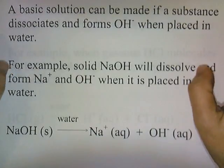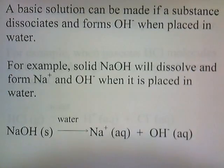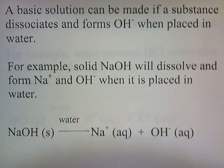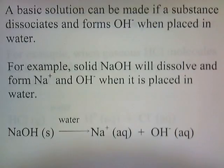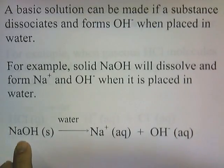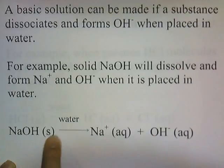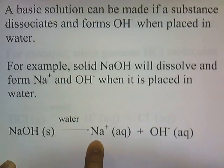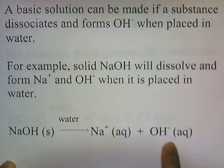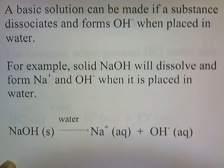A basic solution can be made if a substance dissociates and forms hydroxide when placed in water. For example, solid sodium hydroxide will dissolve and form Na+ and OH- when placed in water. So if you take sodium hydroxide in solid form and put it in water, it'll break apart into a sodium ion and hydroxide ion. And the presence of these hydroxide ions is what makes a solution basic.